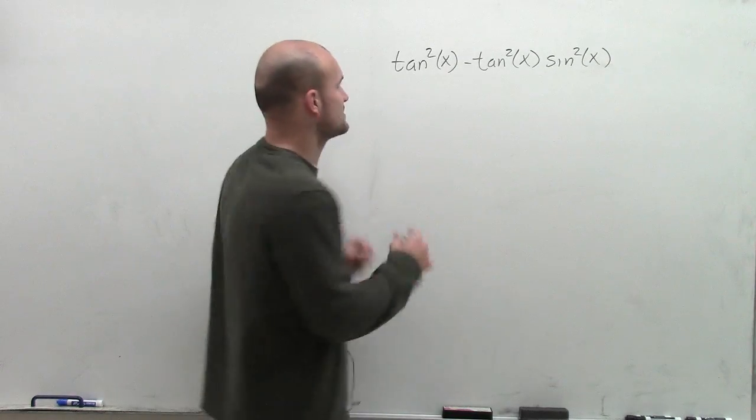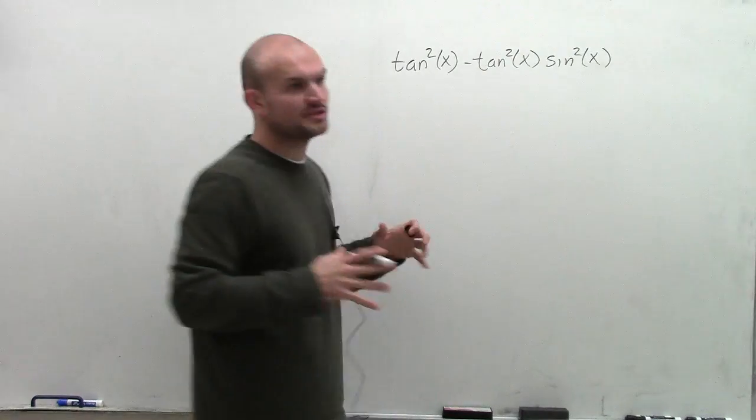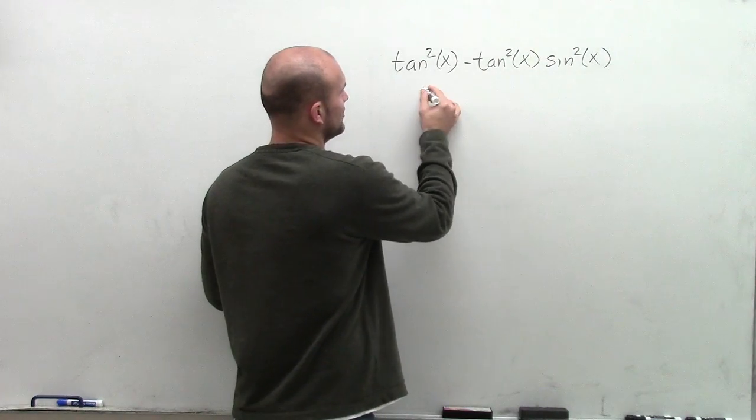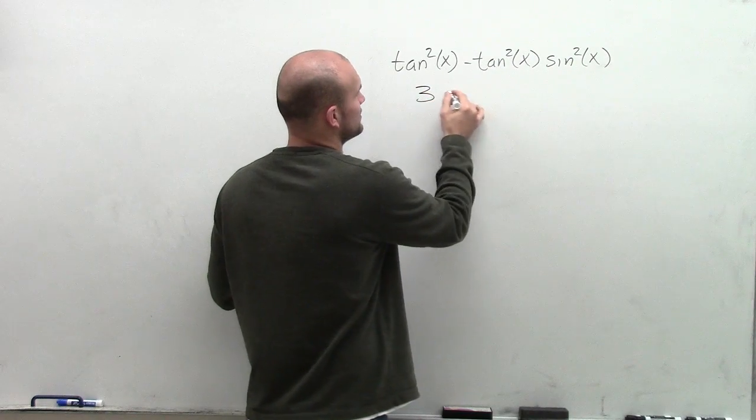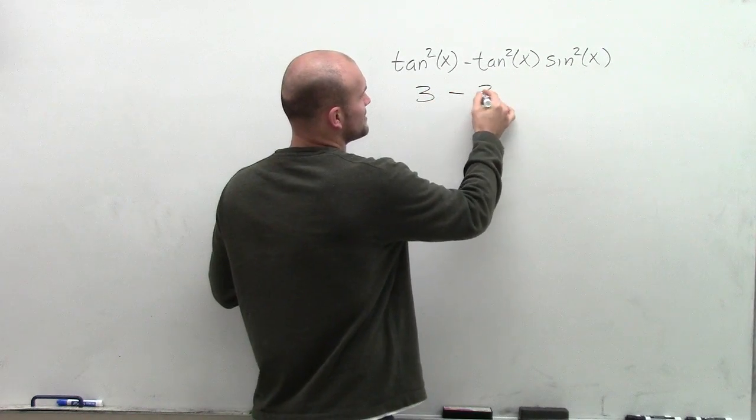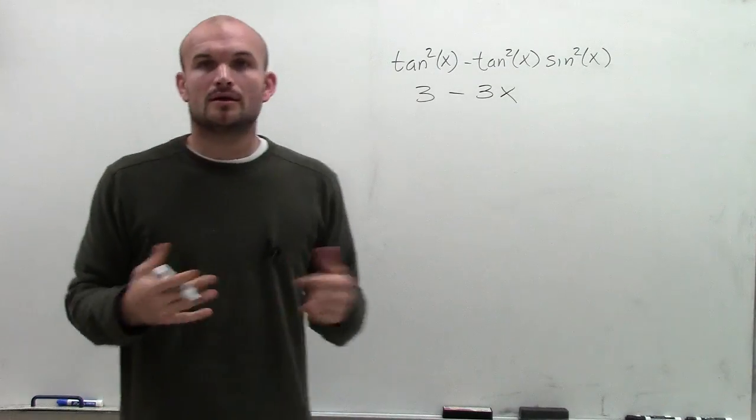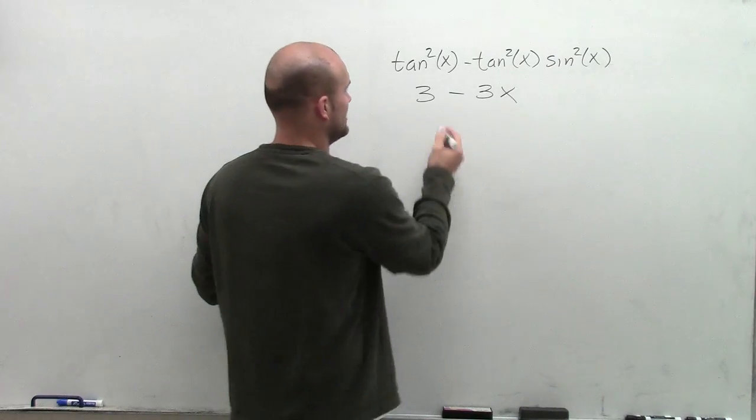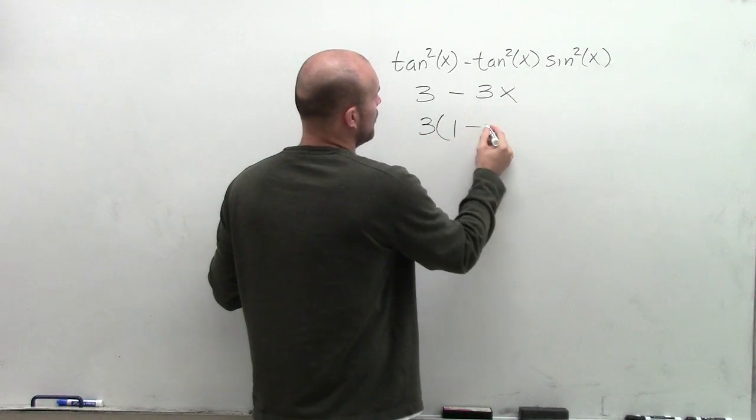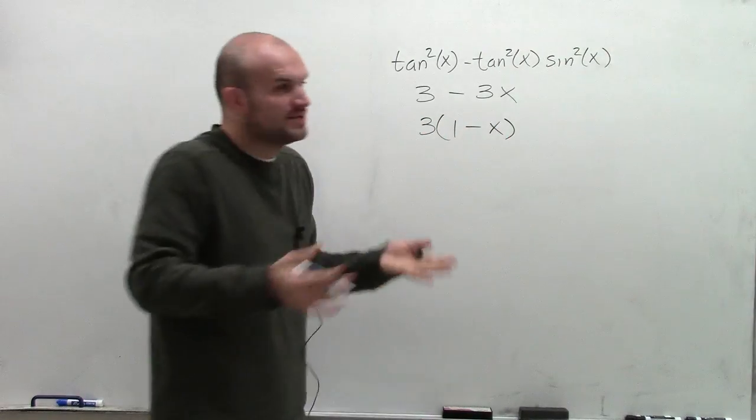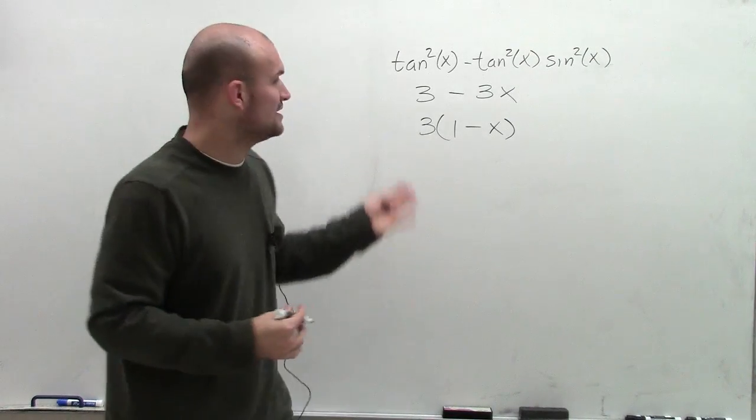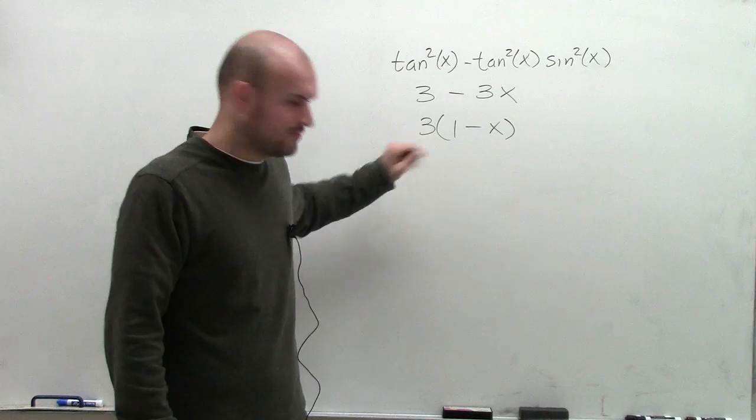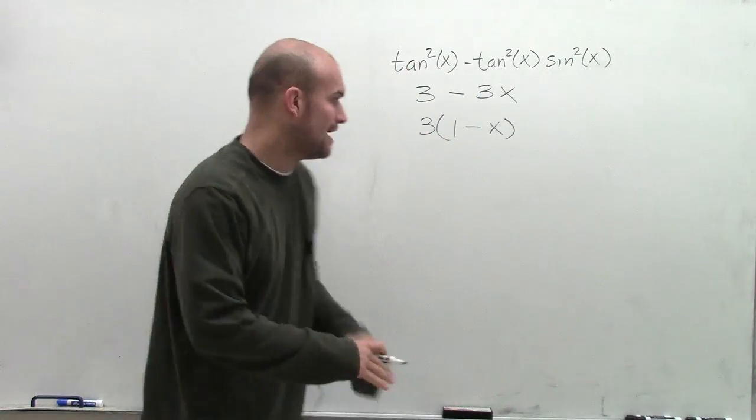A lot of times when I'm dealing with these trigonometric functions, I like to make it a little bit simpler myself. Let's say I was dealing with something like 3 - 3x. Was there another way to rewrite this? Well, yeah, you could factor out the 3, so you'd have 3(1 - x). The reason why we might say that's a little bit simpler is rather than having two different 3's, I now only have one 3. And why would that be helpful?